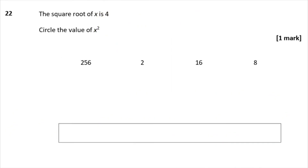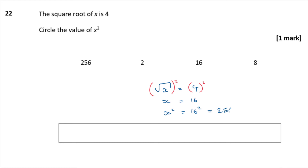Question 22: The square root of x is 4. Circle the value of x². Don't rush — the square root of x is 4, so x = 4² = 16. But we want x², which is 16² = 256. So the answer is 256.